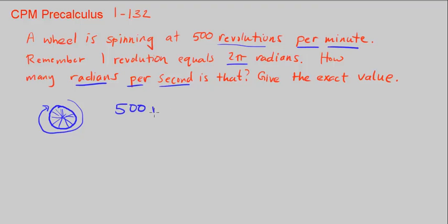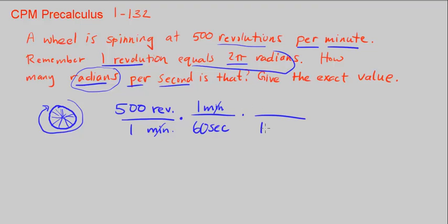We're given 500 revolutions per one minute. How do we get radians per second? We can convert. To cancel out minutes, we know one minute equals 60 seconds. If we multiply by this, we'll cancel out the minutes and get revolutions per second. For the conversion between revolutions and radians, one revolution equals two pi radians.